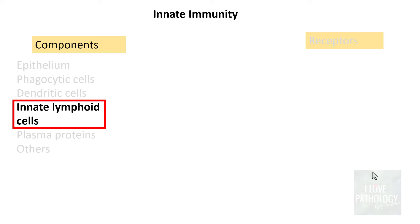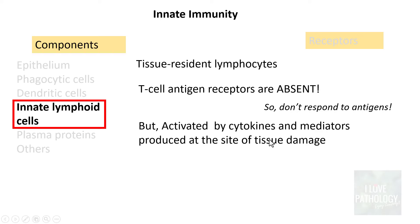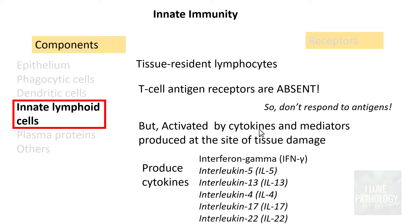Innate lymphoid cells, or ILCs, are lymphocytes that reside in tissues — also called tissue-resident lymphocytes. Unlike regular T lymphocytes, ILCs lack T cell antigen receptors and do not respond to antigens. Instead, they are activated by cytokines and mediators produced at the site of tissue damage. Upon activation, they produce cytokines including interferon-gamma, interleukin-5, 13, 4, 17, 22, and others, which act as defense mechanisms against various microbes.